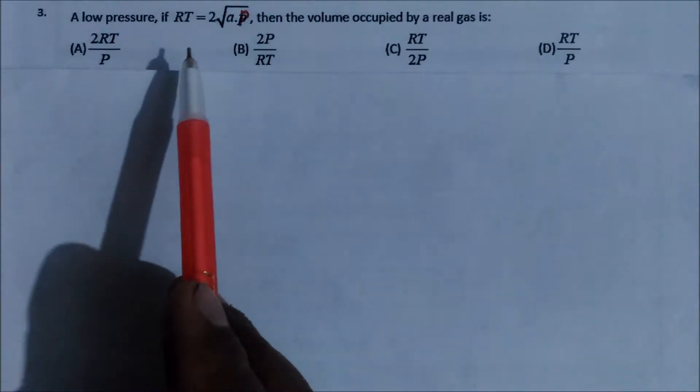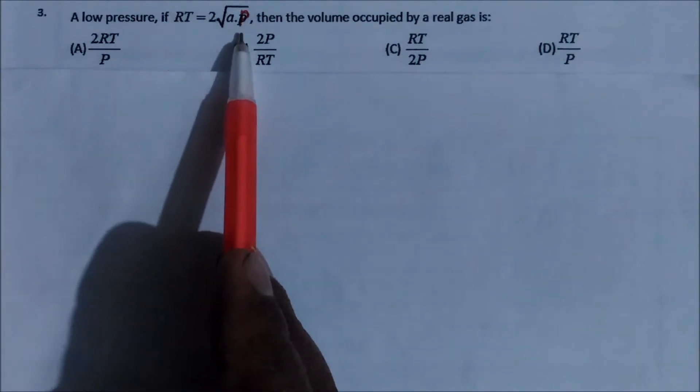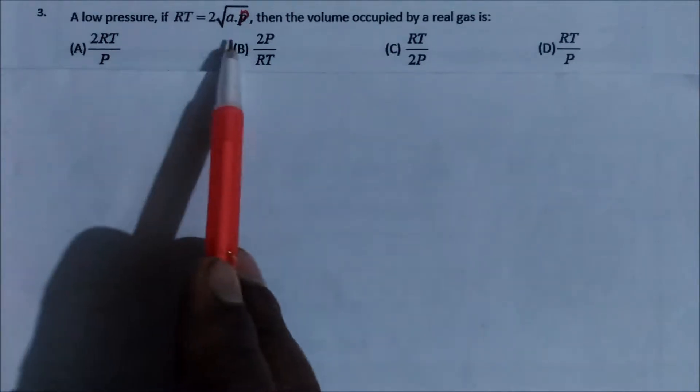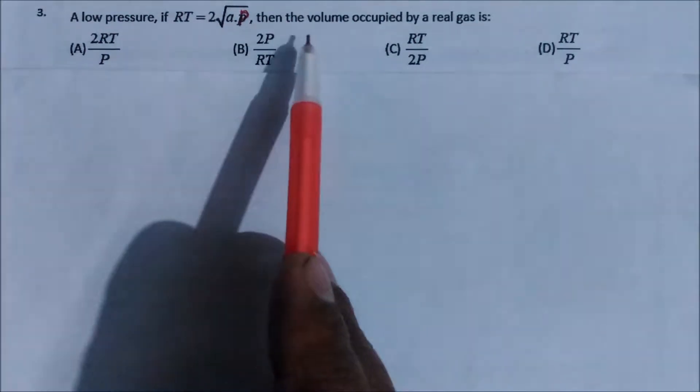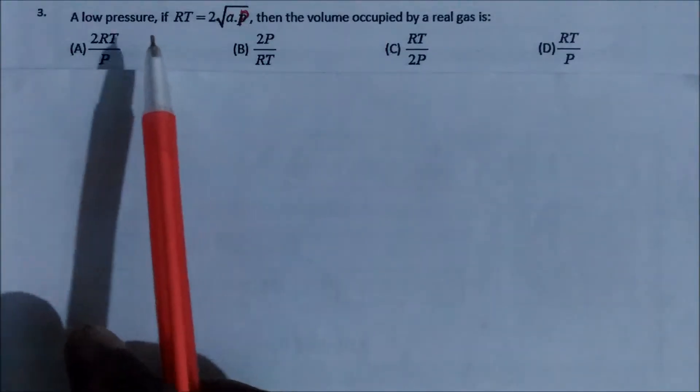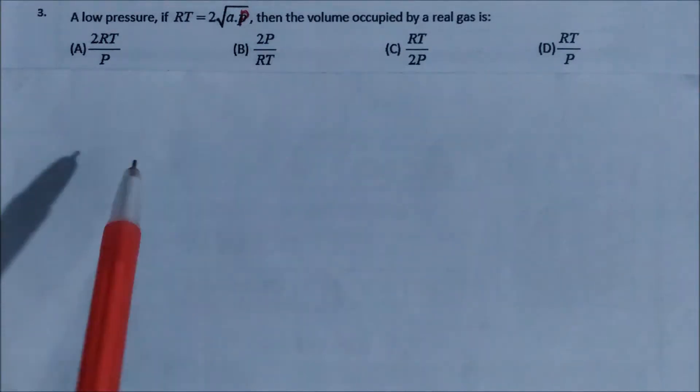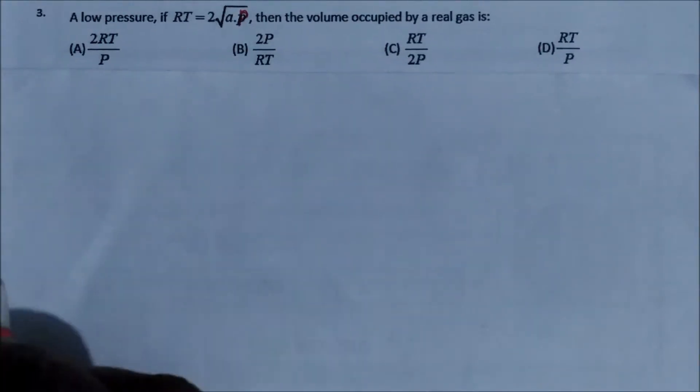A low pressure, if RT is equal to 2 into root over a into P, P is the pressure of the gas, the gas is real gas, then the volume occupied by a real gas is what? We have four options. Now this question is something peculiar, how to find these answers. So we can use the equation.